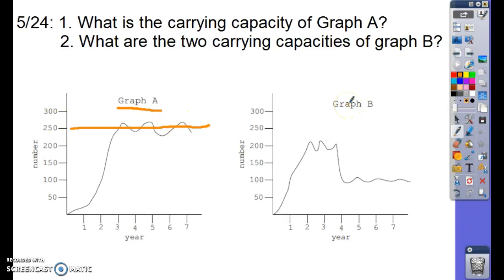What about graph B? There are two carrying capacities. For graph B, we have 200 as one of the carrying capacities and 100. So it's important to look and remember that carrying capacities can be different depending on the year. What do you think could have caused this carrying capacity to be lower in these years?